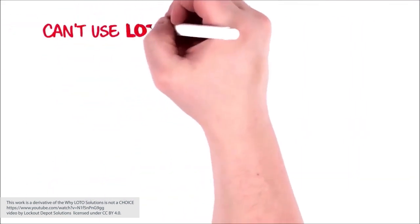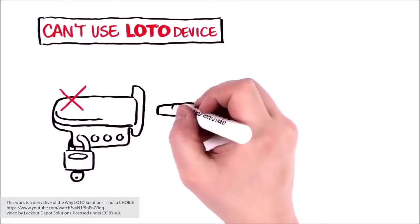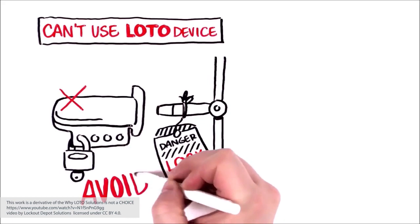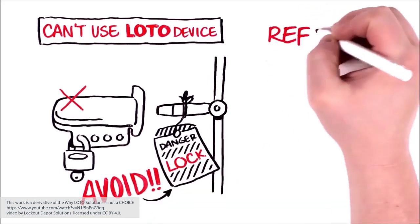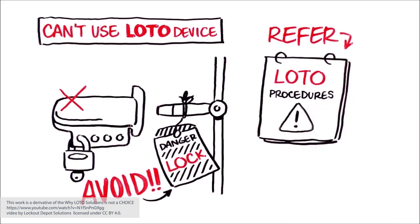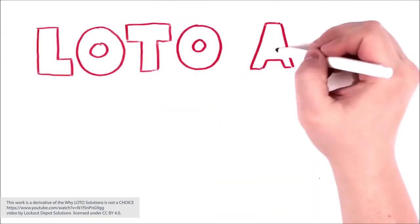What should you do if you can't use a lockout device during your service activity? Can you use just a tag to notify people not to reactivate an energy source? Only if that is the sole option. In other words, this scenario should be avoided as much as possible. If it is the only option, refer to your site's LOTO procedure and take special safety precautions. Remember, tags don't provide a physical barrier against reactivation, which severely limits their effectiveness.